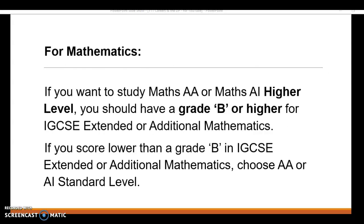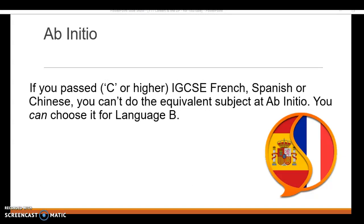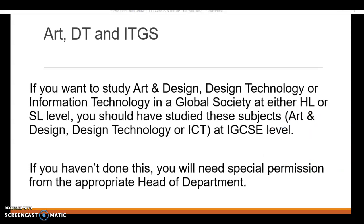A couple of things with mathematics: if you're looking at higher level maths, you need a grade B or higher for IG extended or additional. Anything lower, you should look at standard level maths. For English A higher level, you should have at least a B for first language or literature at IGCSE. If you've only studied IGCSE ESL, you should choose English B. For ab initio, if you have passed IGCSE French, Spanish, or Chinese, you cannot do ab initio - you would have to choose language B. For DT and ITGS, you should have studied them at IGCSE, though exceptions may be discussed with the head of department.